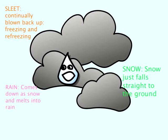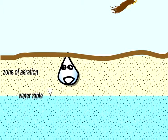Some water seeps into the ground. First, I pass through the zone of aeration. In this zone, openings are partially filled with air and partially filled with water.